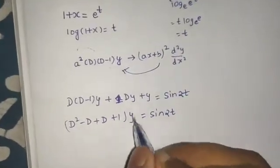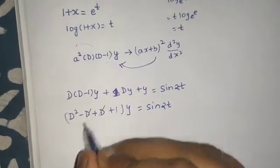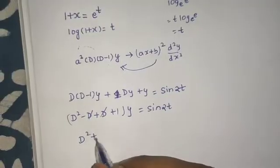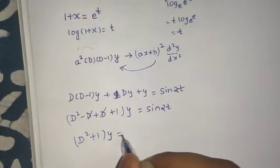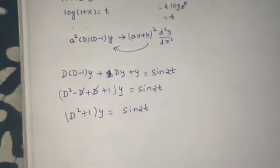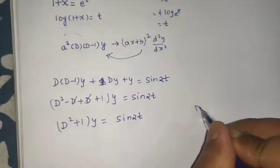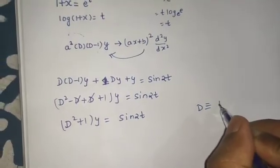Now this is operating on y. This will get cancelled, we are left with d² + 1 operating on y equals sin(2t). Now things have changed here - d is d/dt.